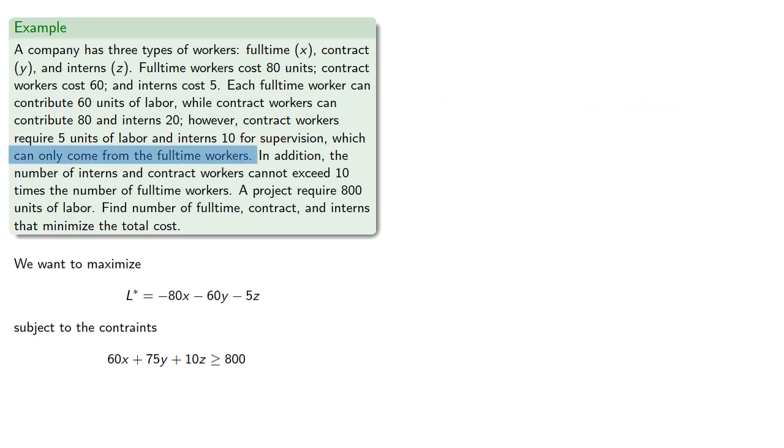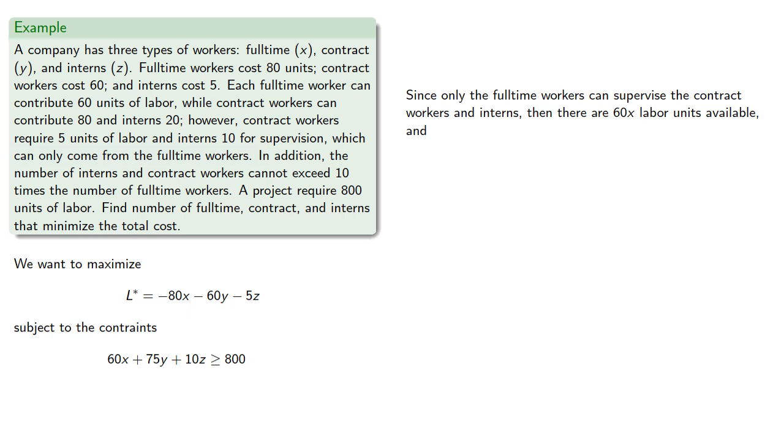But remember, only the full-time workers can supervise the contract workers and the interns, so there are 60x units available and 5y plus 10z labor units required for supervision. So we must have 60x greater than or equal to this amount that's required.